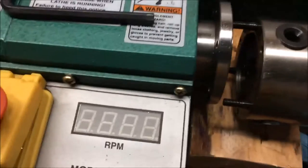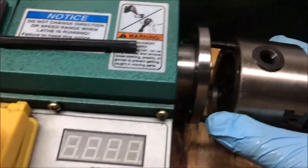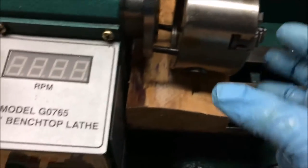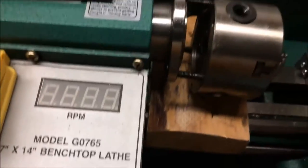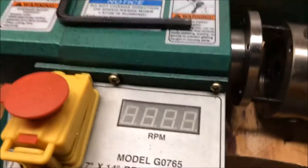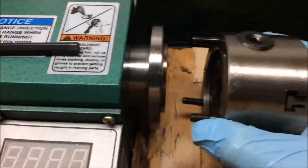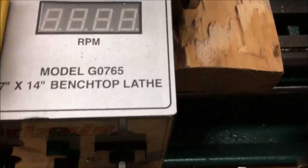Alright, so when you're removing the chuck from your mini lathe it's a good idea to throw a 2x4 or something under the chuck. Grab yourself a 10mm wrench and just undo the three nuts that hold your chuck on the face plate of your mini lathe. Pretty simple.